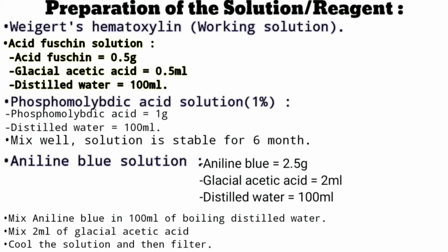Last is aniline blue solution, which is most commonly asked. To prepare it, we need aniline blue 2.5 gram, glacial acetic acid 2 ml, and distilled water 100 ml. Mix aniline blue in 100 ml of boiling distilled water, then add glacial acetic acid 2 ml and mix in distilled water. After mixing, cool the solution, filter it, and then we can use it.